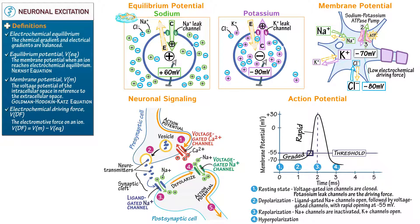The sodium channels are closed and the voltage-gated potassium channels remain open. Finally, indicate that the membrane potential returns to its resting state. At this point, the voltage-gated potassium channels are closed and only the leak potassium channels are open.